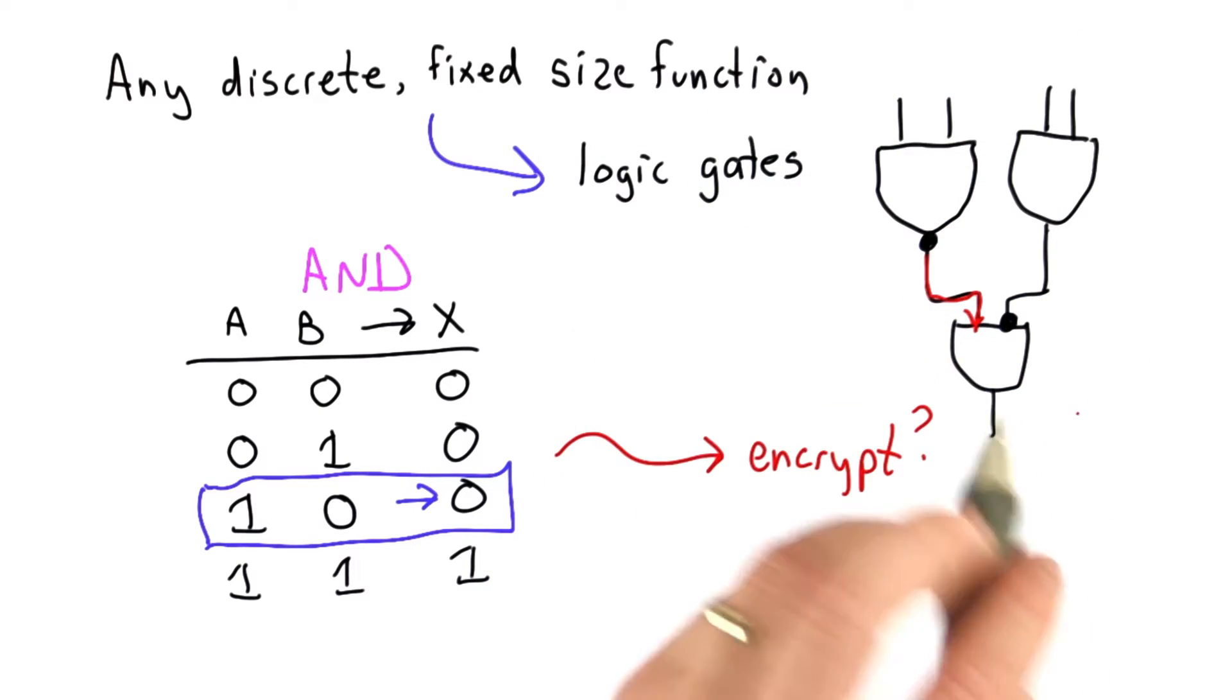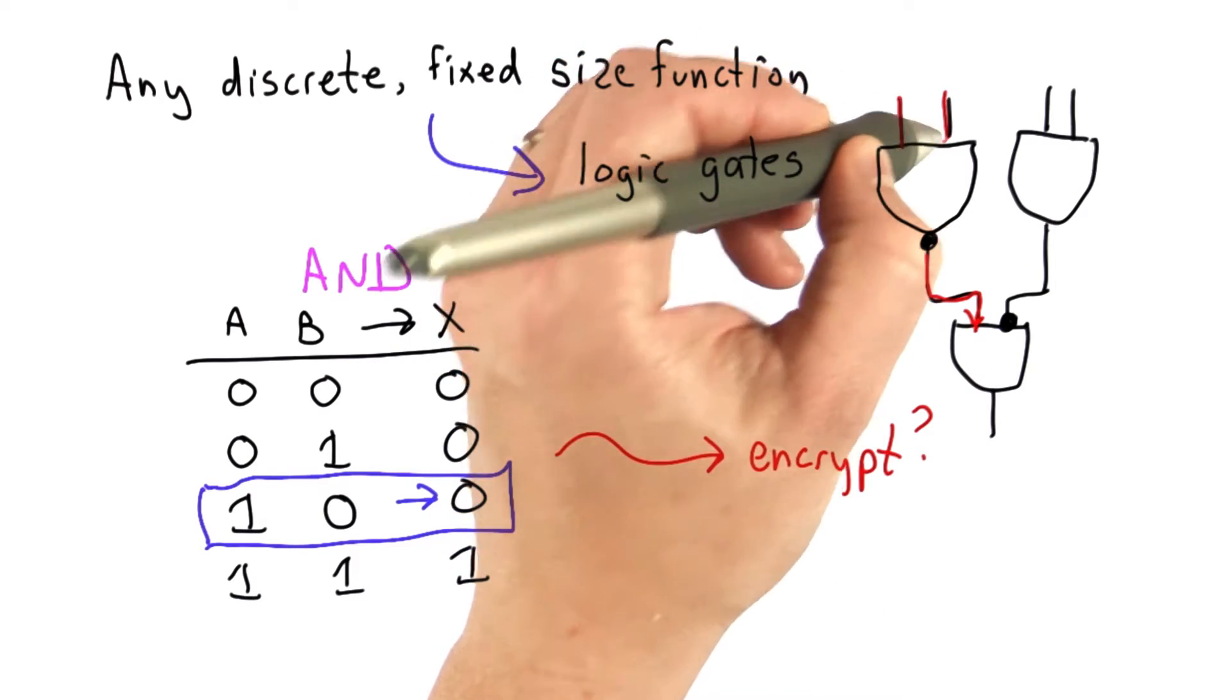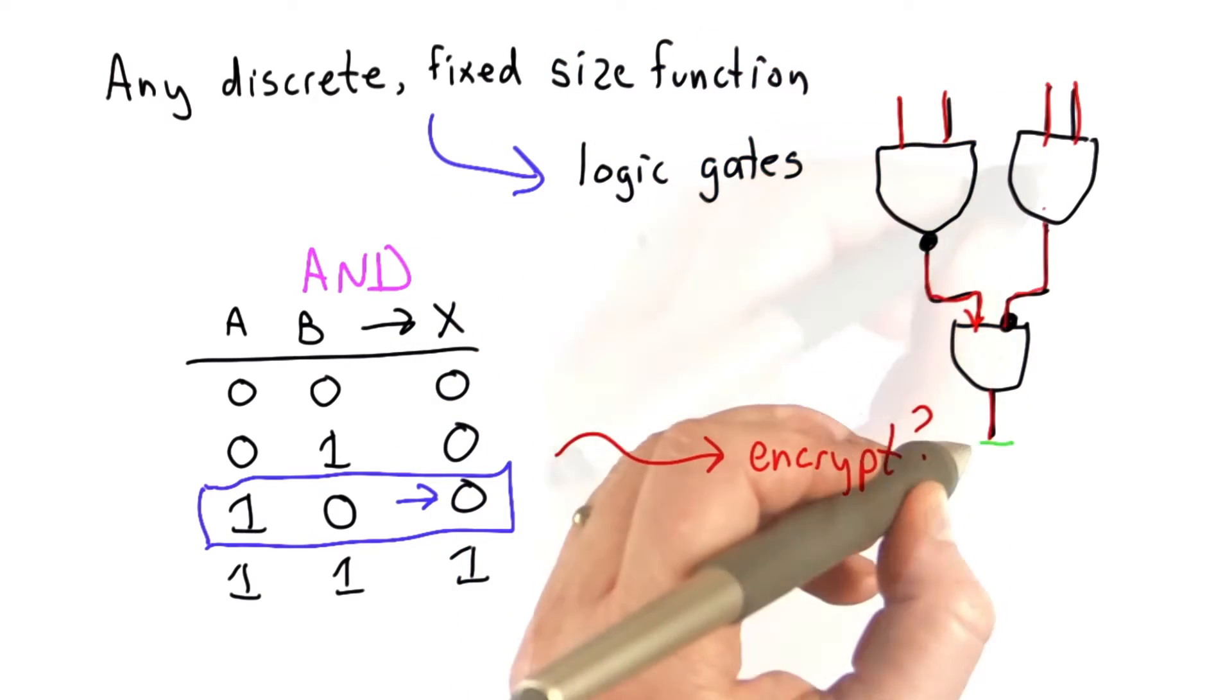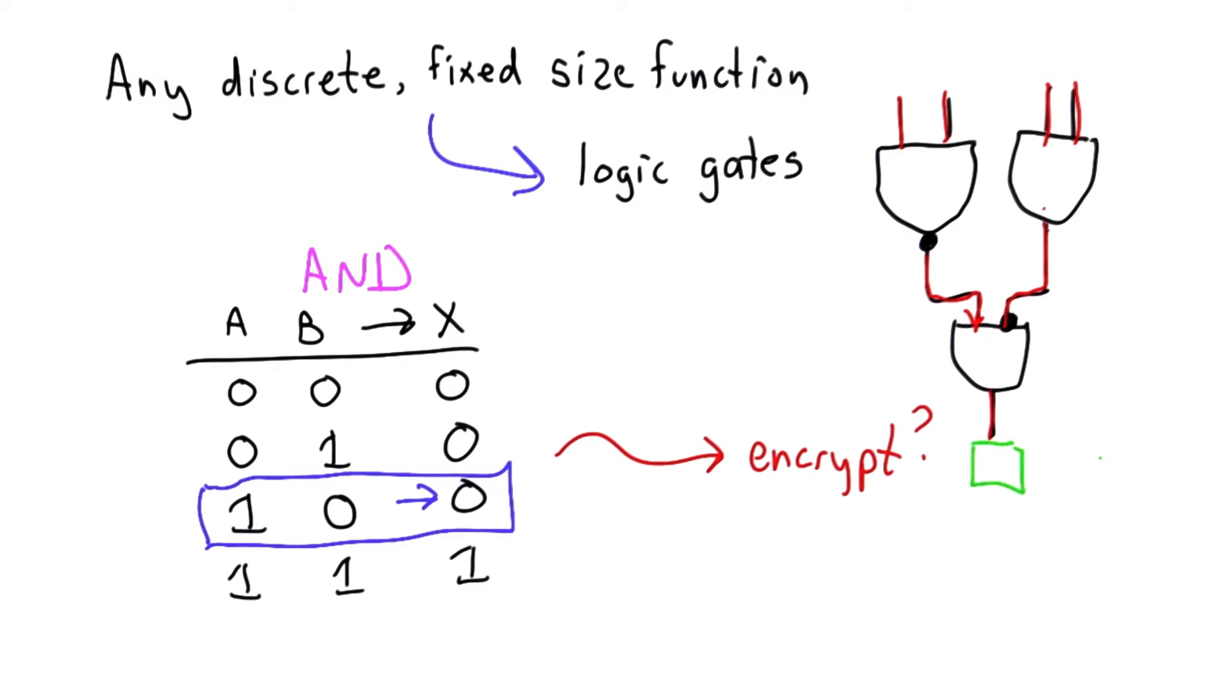If we can evaluate each gate this way, keeping the inputs and outputs encrypted, we can evaluate the whole circuit. And at the end, we can map the final result to a meaningful value.